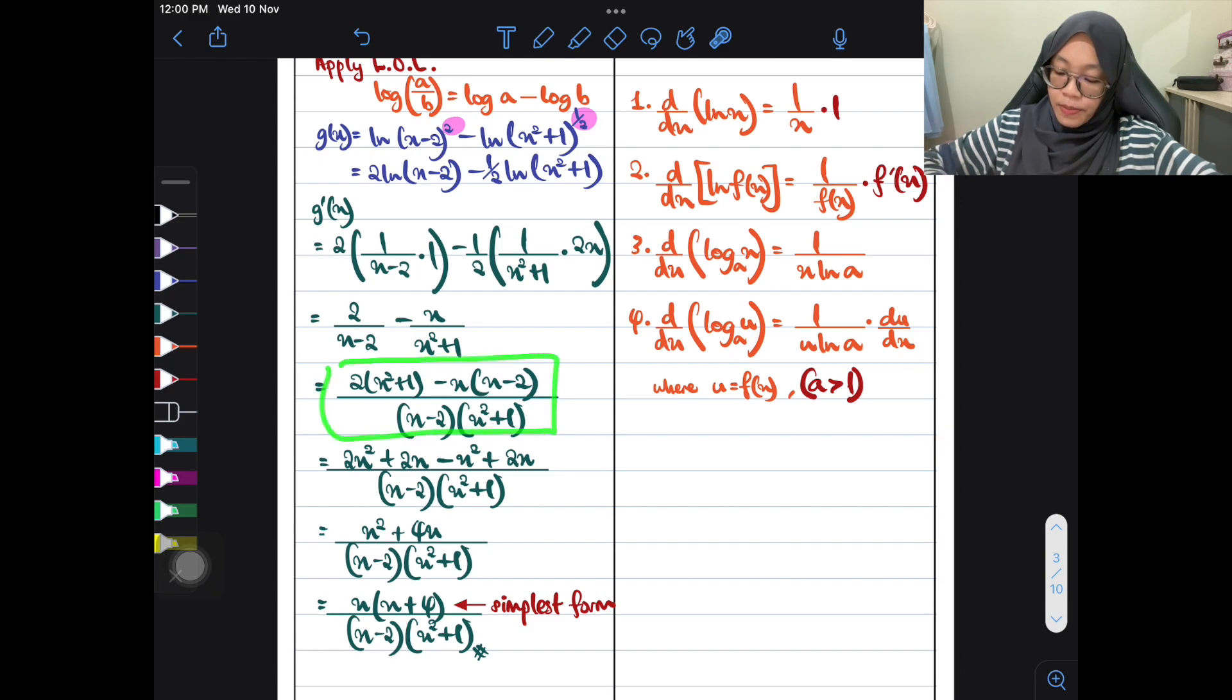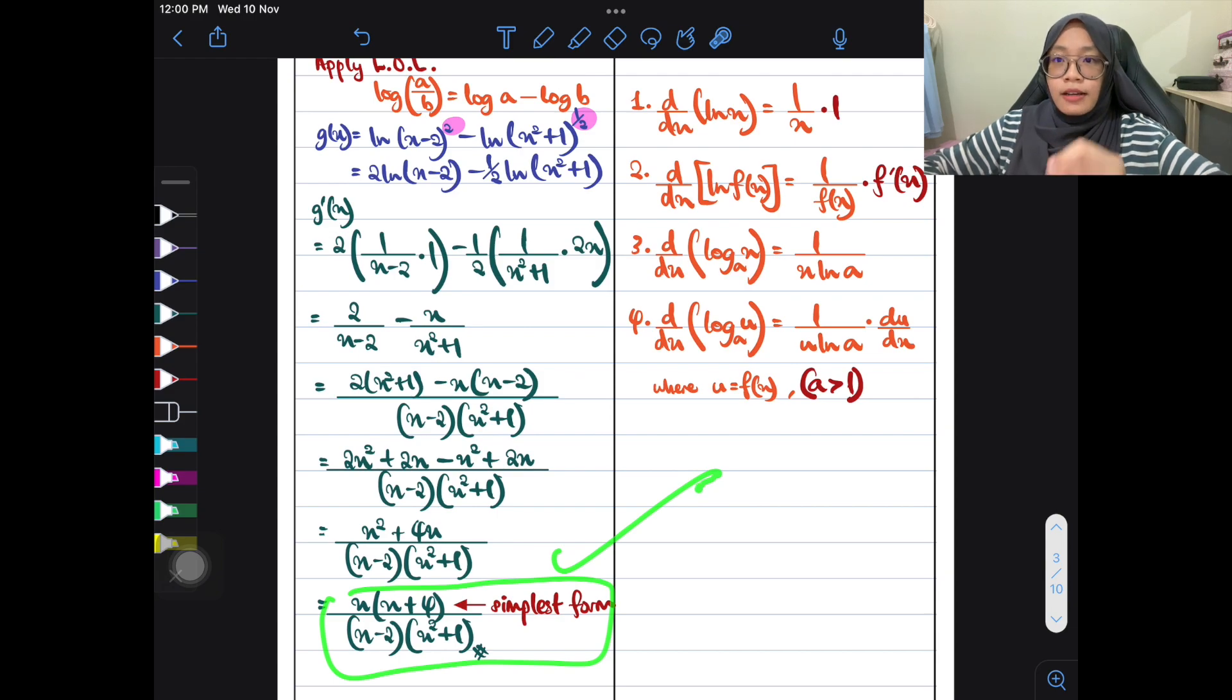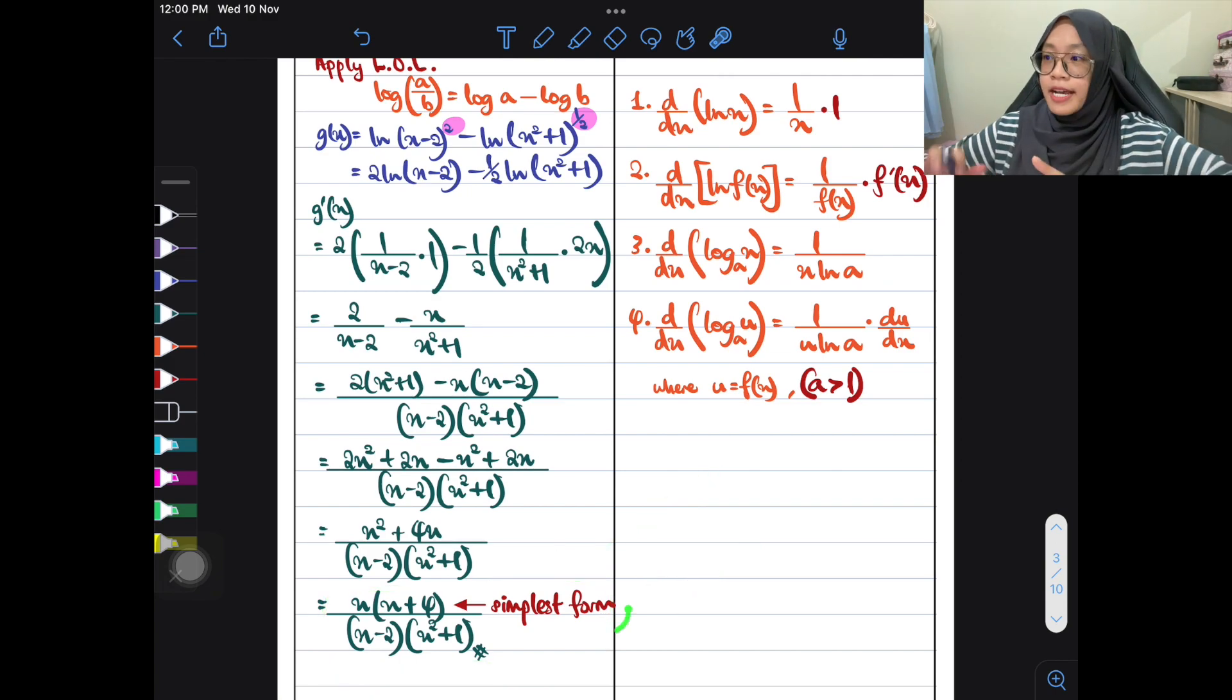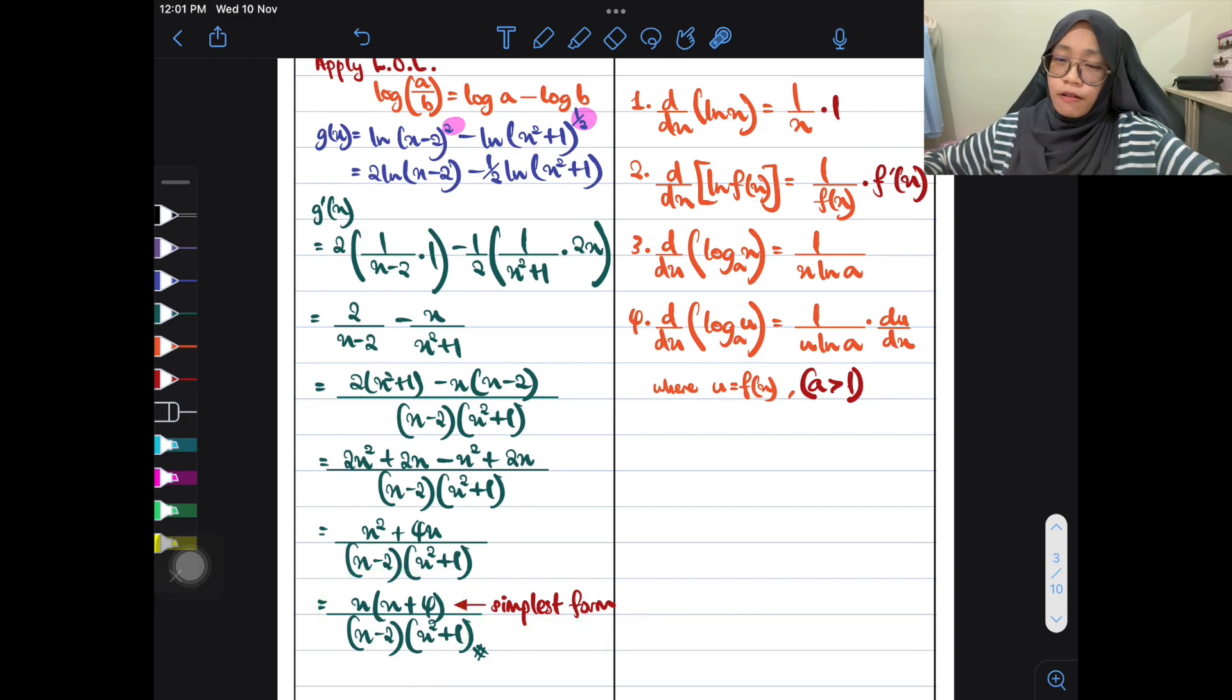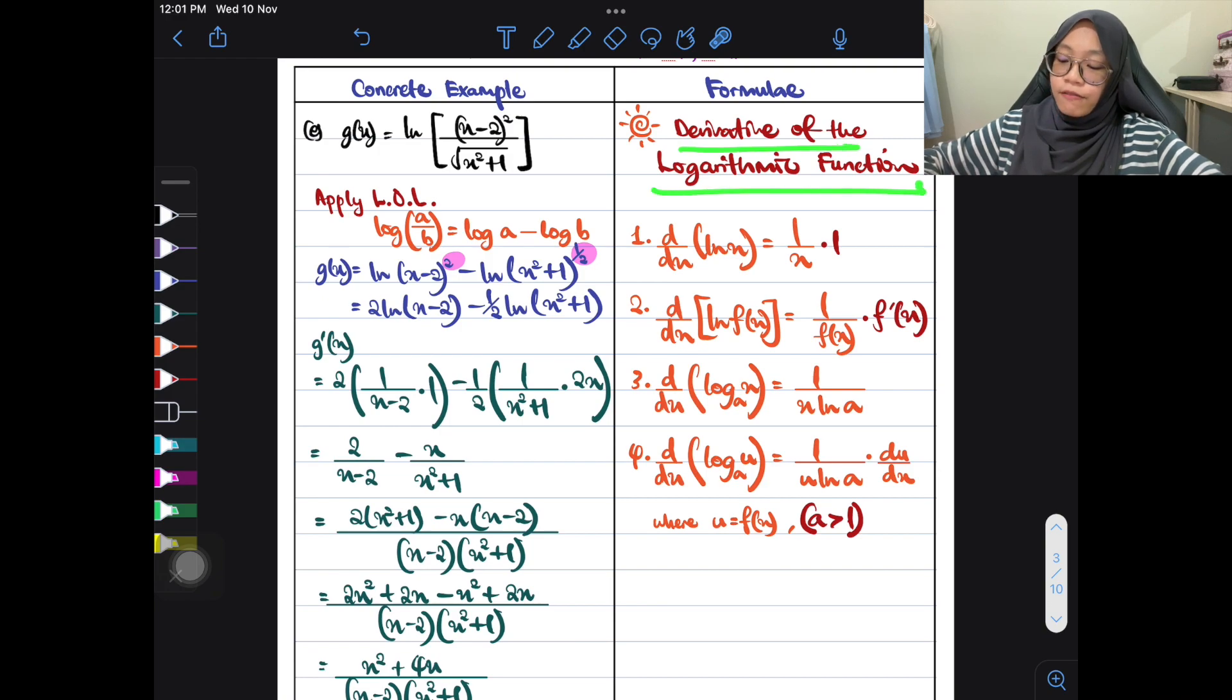Bila dah samakan denominator, you gotta do some expansion. Simplify it, and when you simplify it, you will find out that this is X squared plus 4X, and here also can be factorized, and this will be the simplest form that you would really look forward to having it. Sebab untuk chapter 9, memang kita sentiasa aim untuk dapatkan only one fraction. Bila ada one fraction, itulah yang dipanggil sebagai simplest form. Alright. Untuk derivative of logarithmic function, setiap kali ada peluang untuk apply LOL, tolonglah applykan dia.